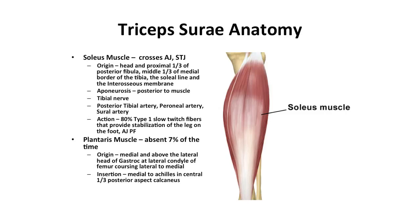The soleus muscle crosses the ankle joint and subtalar joint. Its origin is the head and proximal one-third of the posterior fibula, the middle one-third of the medial border of the tibia, and the soleal line and interosseous membrane. The aponeurosis is posterior to the muscle. It is innervated by the tibial nerve with arterial supply from the posterior tibial, peroneal, and sural arteries. The soleus is 80% type 1 slow-twitch fibers providing stabilization of the leg on the foot. The plantaris muscle can be absent approximately 7% of the time, originating medial and above the lateral head of the gastroc, inserting medial to the Achilles tendon in the central one-third of the posterior calcaneus.